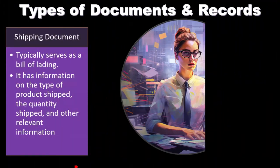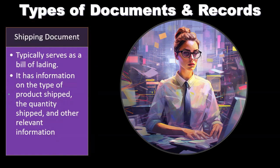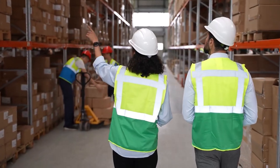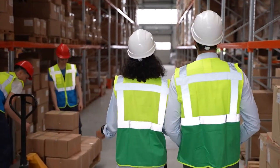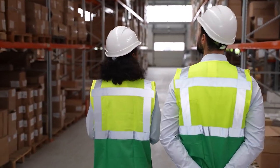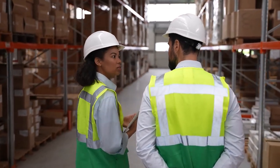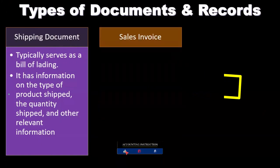The shipping document typically serves as a bill of lading and contains information on the type and quantity of product shipped and other relevant information. The shipping document is important because, for goods being shipped, it often represents the point at which revenue is recognized. Revenue for goods sold typically happens when the goods are delivered. If goods are shipped from a warehouse, the shipping document tells us the quantity of goods and when shipment took place, allowing us to tie that to when revenue was recognized.